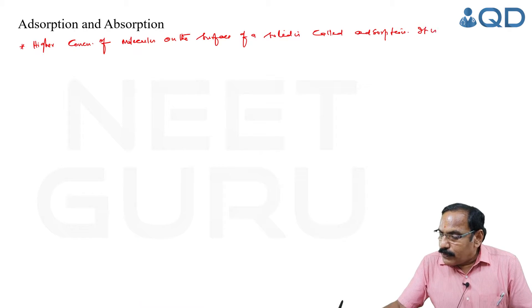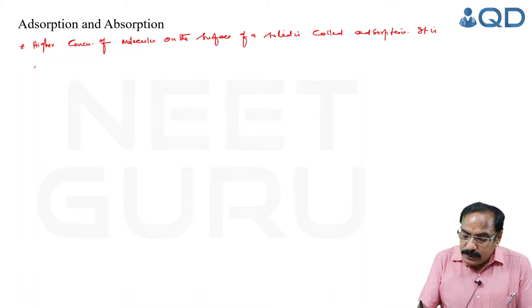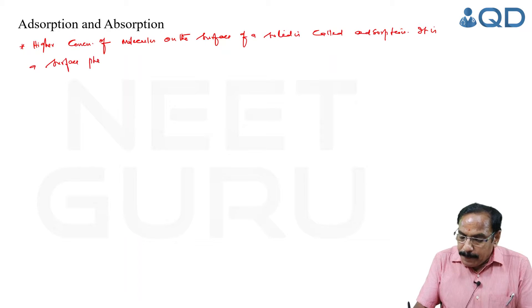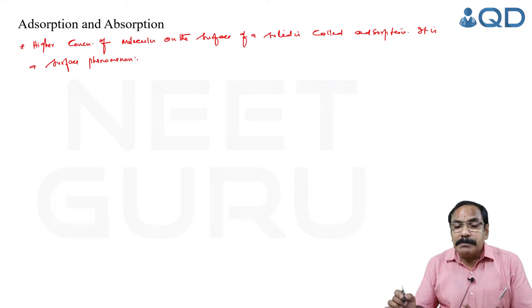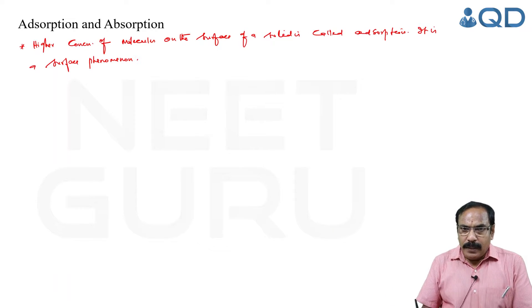Higher concentration of molecules on the surface of a solid is called adsorption. It is a surface phenomenon. Absorption is a bulk phenomenon.